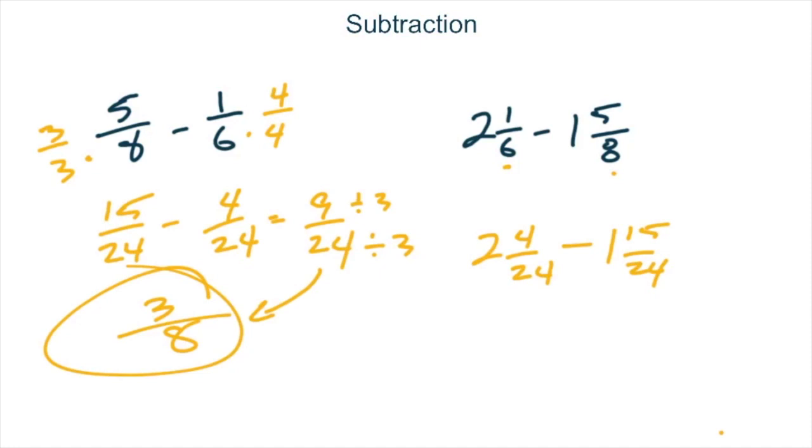So what we'll need to do is take our 2 right here and steal from it. We can steal 24 24ths from it. We can take a whole 1. So we would have 1, and then if we add our 24 24ths to the 4 24ths we already have, that would give us 28 24ths. And now on this side, we have just 15 24ths attached to our 1. And 28 24ths minus 15 24ths is going to be 13 24ths. And then we have just 1 minus 1 here. So our final answer turns out to be 13 24ths.